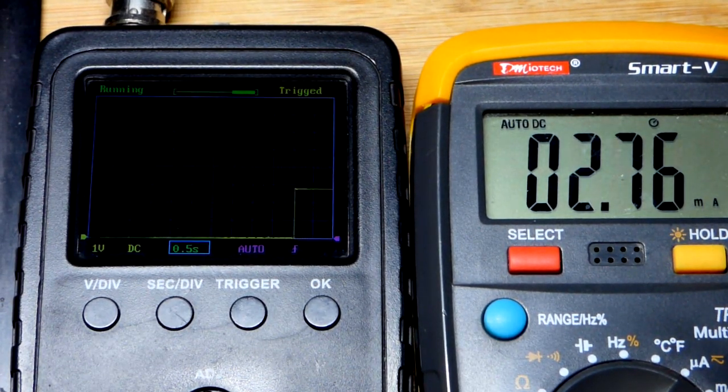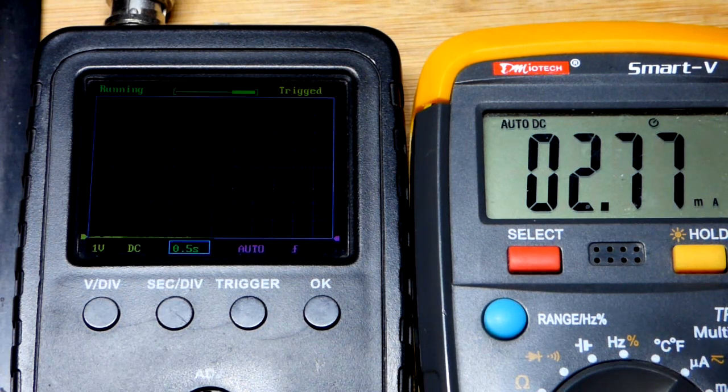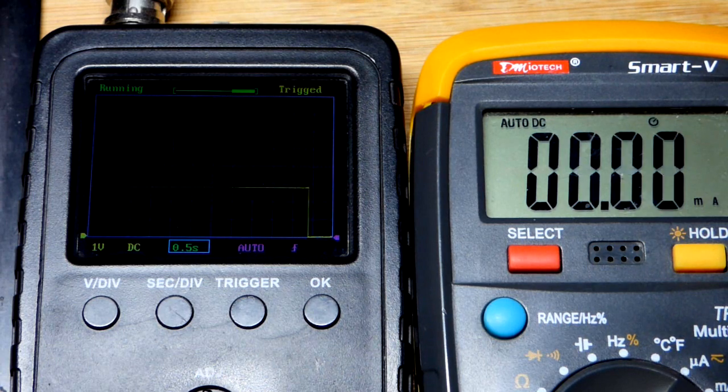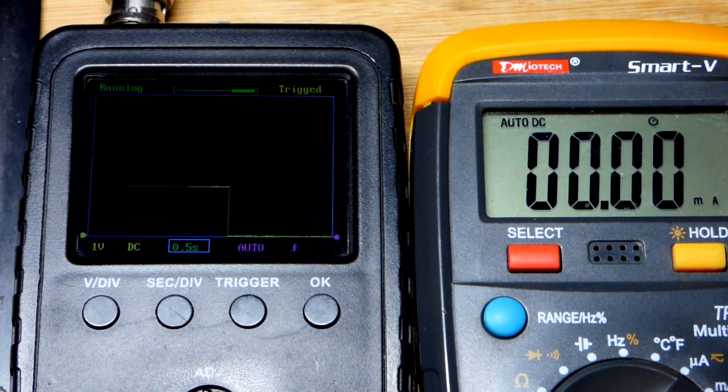If we have 1 volt across the resistor, we'll have 1 milliamp of current. 2 volts across it, we'll have 2 milliamps of current and so on. Pretty simple.